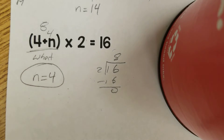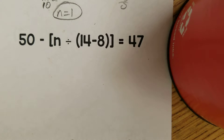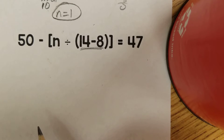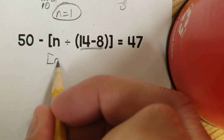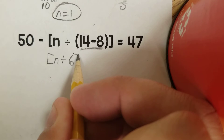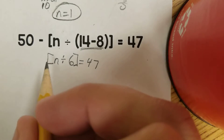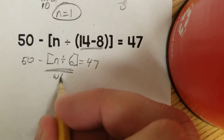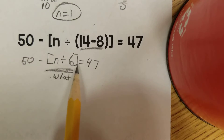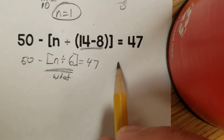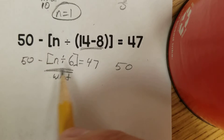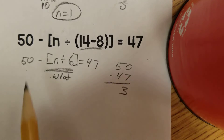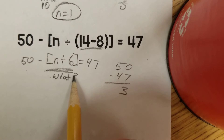Next, we work out that 14 minus 8 equals 6, so we have a bracket with n divided by 6 equals 47 minus 50 — wait, 50 minus what is 47? I can't solve this directly, so: 50 minus what equals 47? We subtract 47 from 50, which tells us the answer is 3. So n divided by 6 has to equal 3.